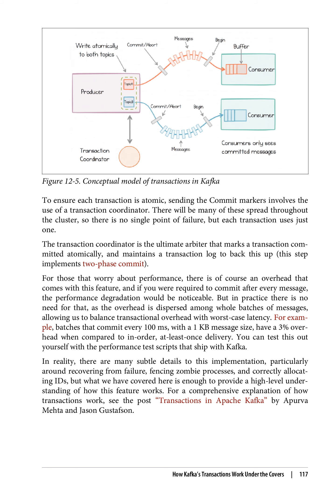To ensure each transaction is atomic, sending the commit markers involves the use of a transaction coordinator. There will be many of these spread throughout the cluster, so there is no single point of failure, but each transaction uses just one. The transaction coordinator is the ultimate arbiter that marks a transaction committed atomically, and maintains a transaction log to back this up. This step implements two-phase commit. For those that worry about performance, there is of course an overhead that comes with this feature, and if you were required to commit after every message, the performance degradation would be noticeable. But in practice there is no need for that, as the overhead is dispersed among whole batches of messages, allowing us to balance transactional overhead with worst-case latency. For example, batches that commit every 100 milliseconds with a 1 kilobyte message size have a 3% overhead when compared to at-least-once delivery.